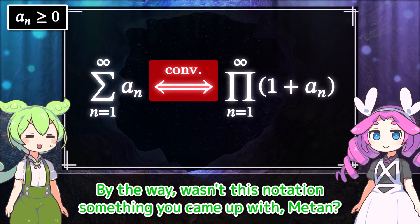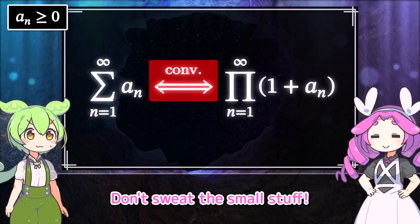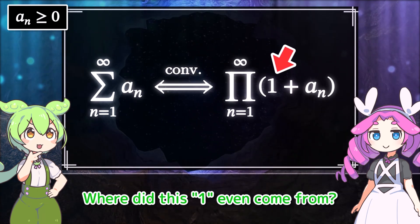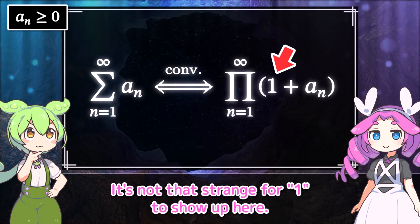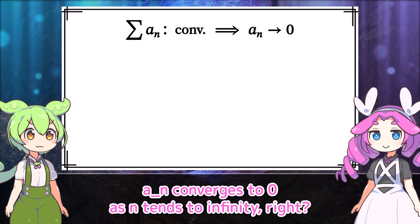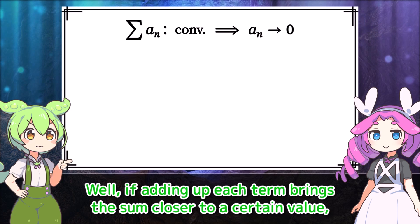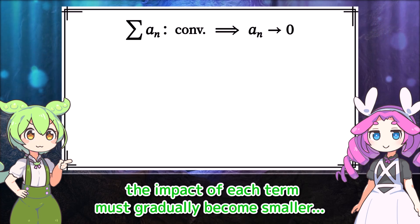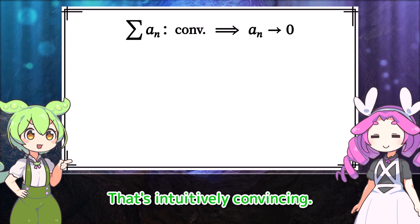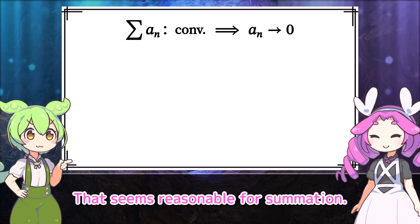Wasn't this notation something you came up with, Merin? Don't sweat the small stuff. But still, considering the infinite product of (1 + a_n) is kind of strange — where did this 1 even come from? It's not that strange for 1 to show up here. When the infinite sum of a_n converges, a_n converges to 0 as n tends to infinity, right? If adding up each term brings the sum closer to a certain value, the impact of each term must gradually become smaller — the values being added must approach 0. That's intuitively convincing.